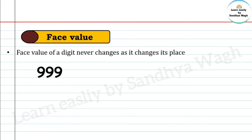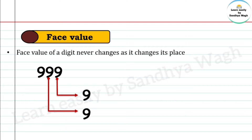For example, in the number 999, the face value of each 9 is 9 only. The face value of the 9 in the ones place is 9, the face value of the 9 in the tens place is 9, and the face value of the 9 in the hundreds place is also 9.